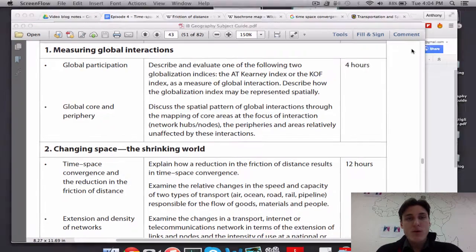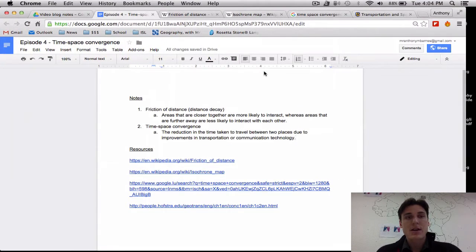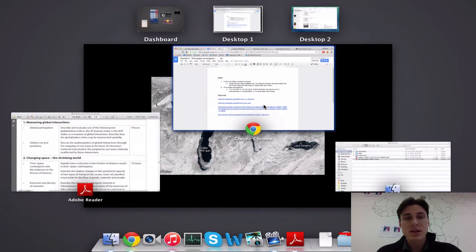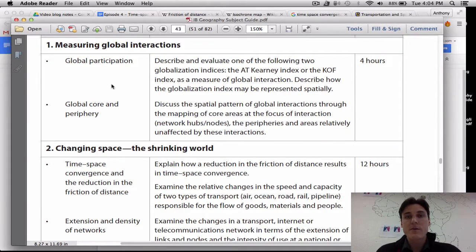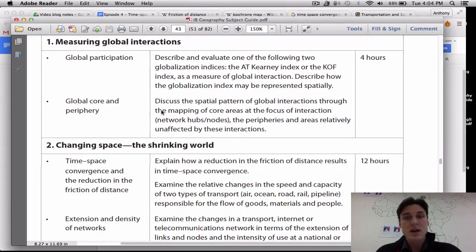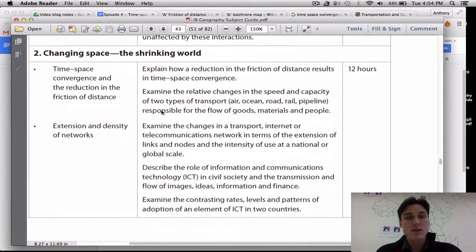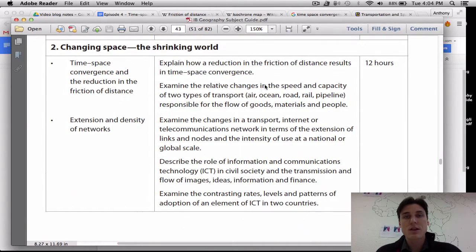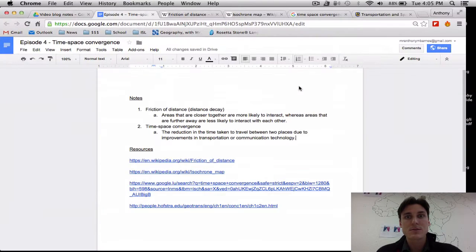Global Interactions, episode 4, coming at ya. This is time-space convergence. We're moving on from measuring global interactions into changing space, the shrinking world. The world is shrinking? What does that mean? We're going to figure that out. We're going to talk about the reduction in friction of distance and time-space convergence. All these things might sound crazy, but hopefully by the end of this video you'll know what I'm saying.